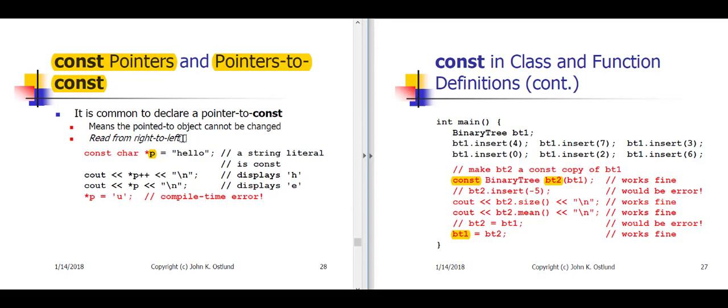And we've initialized P to contain the address of the little h at the beginning of the string hello. Recall that hello is actually six chars, H-E-L-L-O and null, and P is set up as a pointer to the first char in that string literal. Because string literals are constant, we need to declare P as a pointer to a char const to make sure we don't accidentally change the character that P is pointing to.